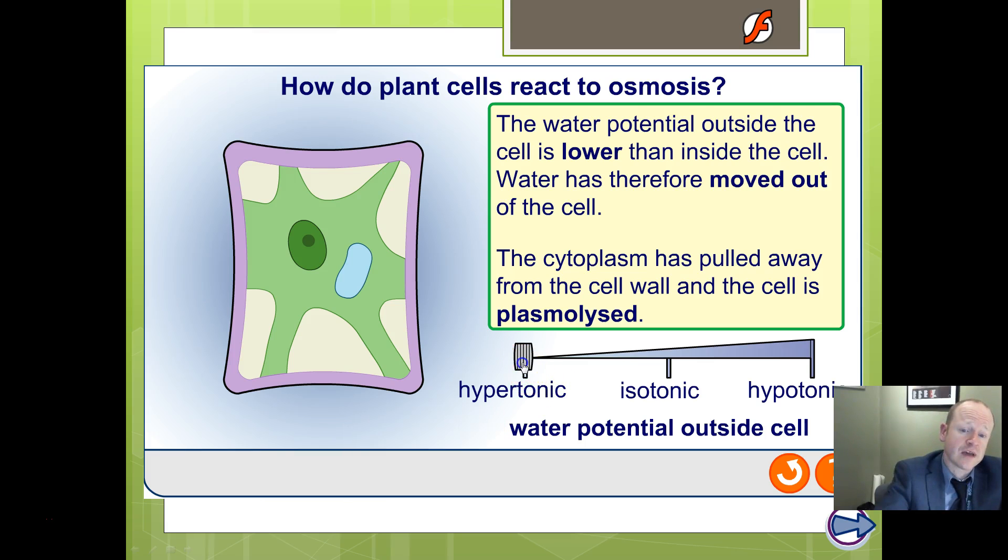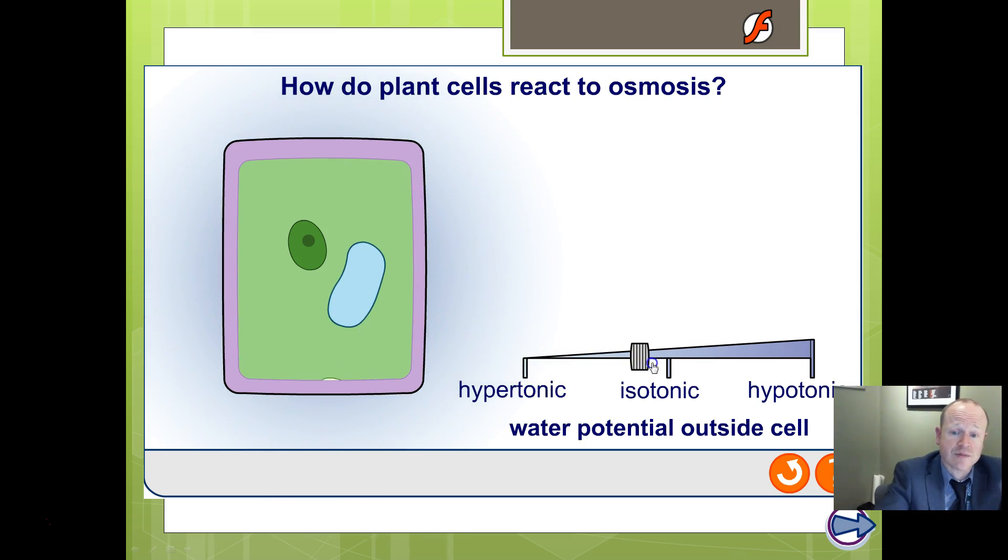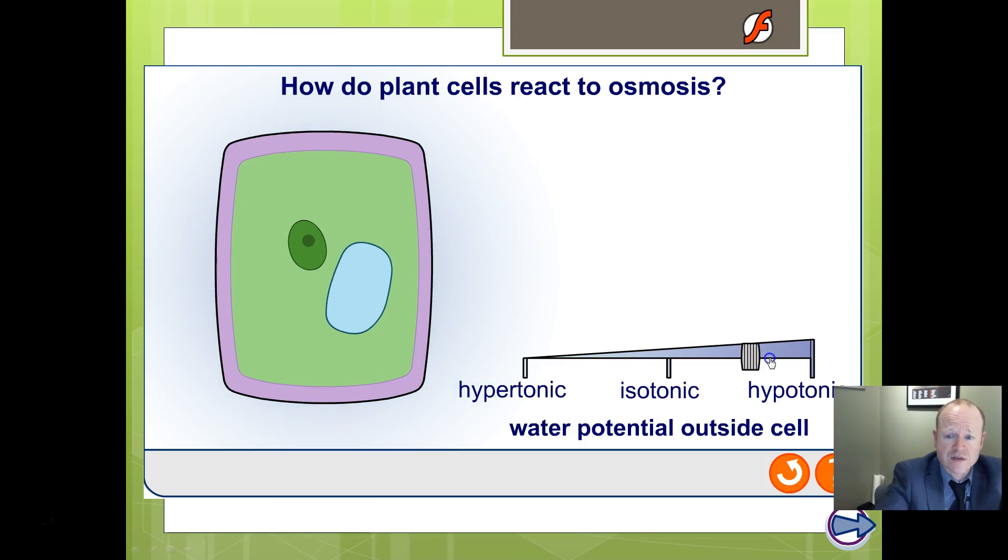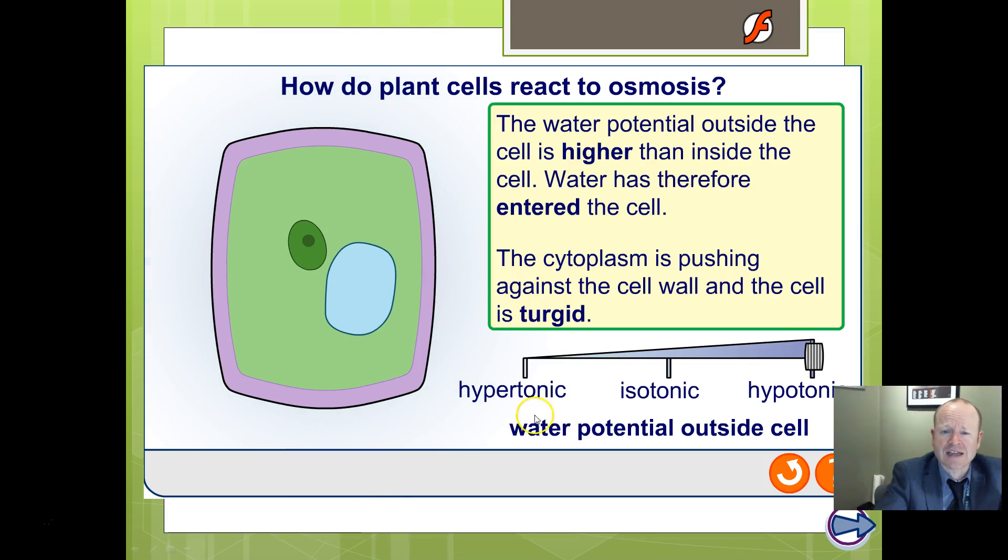If we think about the inverse case, the opposite case when we put it in a much more watery solution, the water potential outside is now higher. The water potential inside is lower. So water tends to move in. It will try and move in and it will start to fill up this vacuole. And it pushes against the cell wall. Remember cell walls are made of cellulose - they're rigid and inflexible and they will tend to resist movement.